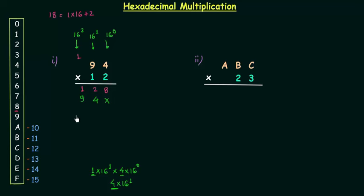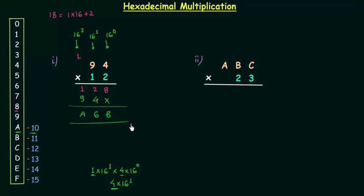1 multiplied by 9 is 9, and the weight is 16 raised to power 2. Now I will add them. In the first column I only have 8, so 8 will come here. 2 plus 4 is 6. 1 plus 9 is 10, and we represent 10 as A. So A will come in the 16 raised to power 2 column. Finally we have A, 6, 8 as the answer for problem number 1.